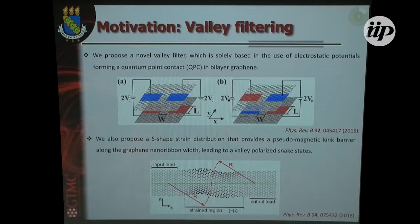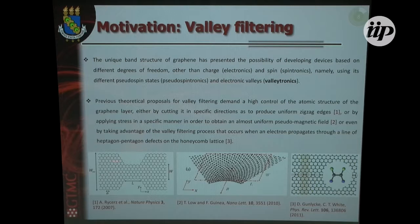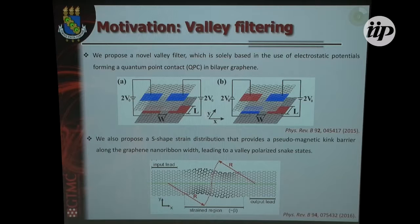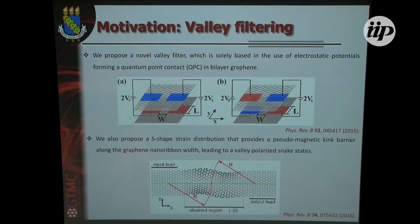So let's move to my two proposals. In contrast to these other proposals that need a specific kind of edges, we have a very simple proposal: if you have a bilayer graphene system and you apply a bias potential in such a way that you have a constriction with an unbiased channel, and if you align the potentials in each layer, you obtain a usual quantum point contact. On the other hand, if you take opposite gates on opposite sides of your sample, you obtain a chiral one-directional state for each valley.